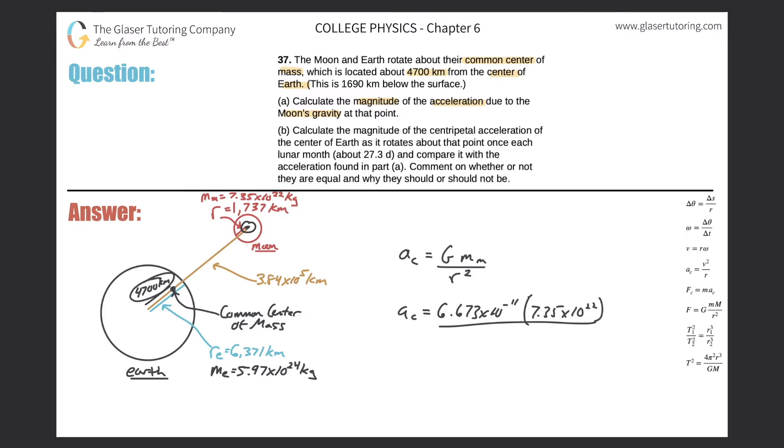And how do we find that? Well, I do know that the distance between the center of the moon and the center of earth is this distance in yellow, 3.84 times 10 to the five kilometers. So how can I find the distance between this point and this point? All I'd have to do is simply subtract out the 4,700 kilometers. And that would give me this nice value right in here. So let's plug that into the formula. Take a look—these are distances in kilometers, so I need to convert those to meters.